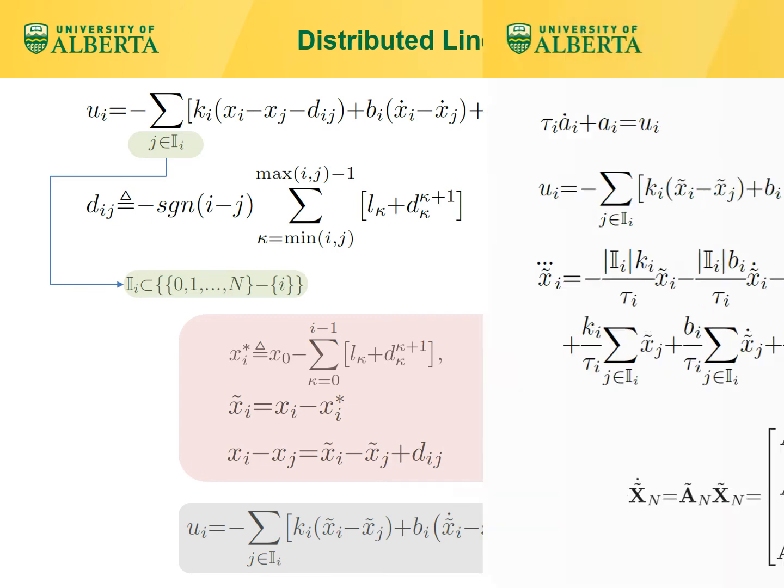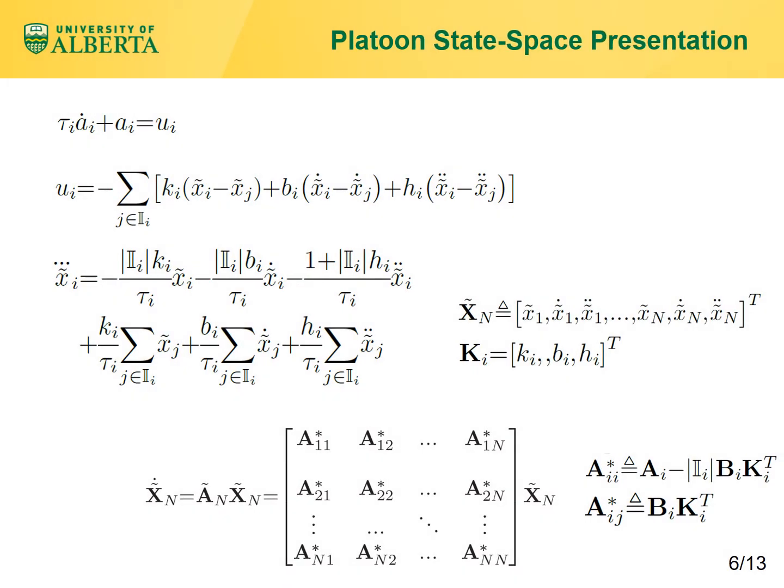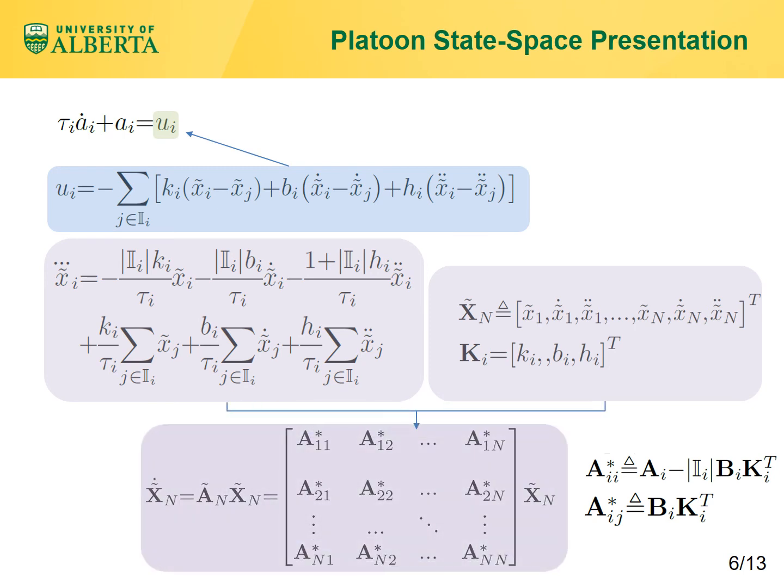If we substitute u_i from the previous slide into the feedback linearized dynamic equation and do this for all follower vehicles while defining x̃_n and k_i, we get this formula for the total state-space representation of the platoon, where the definitions of capital A subscript ii and ij are given as you see.